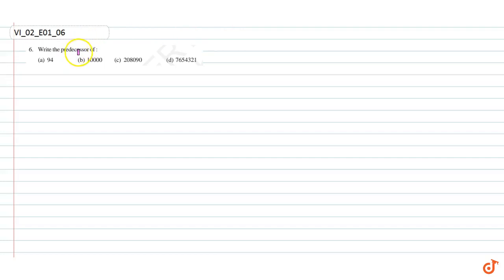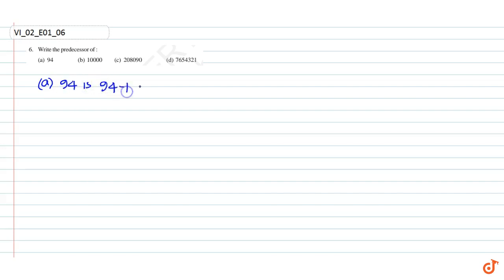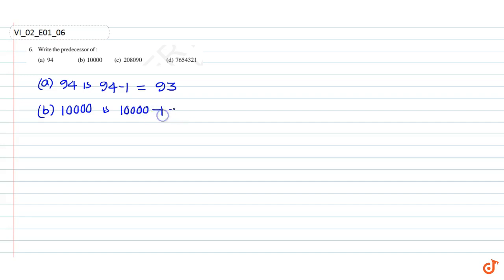In this question we have to find the predecessors of the given numbers. Part a: the predecessor of 94 is 94 minus 1, which is equal to 93. The predecessor of 10,000 is 10,000 minus 1, which is equal to